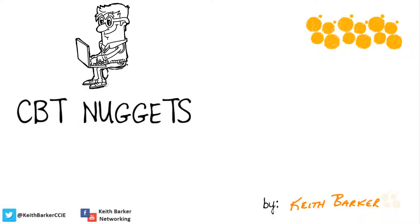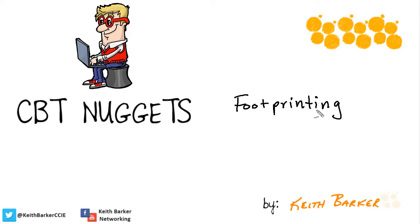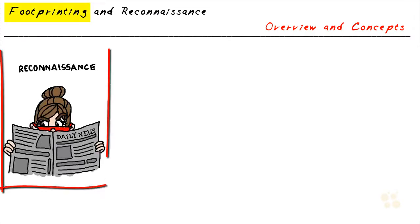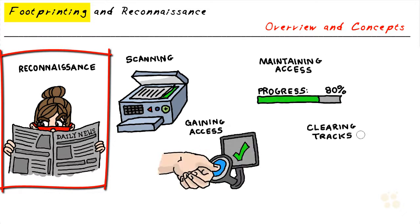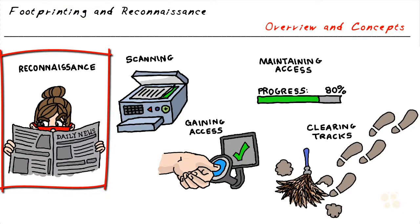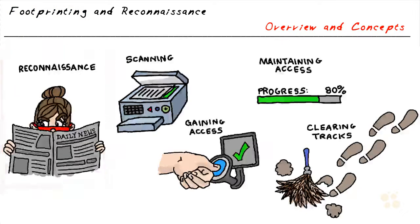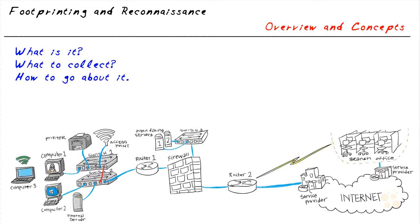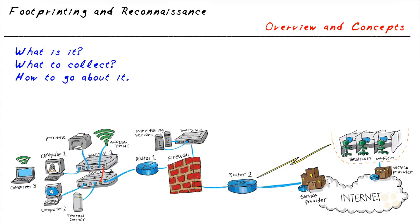Imagine we've been given permission to do some reconnaissance and footprinting of an organization — all our authorization slips signed by the right people. The question is: what are we going to be looking for, and what methods can we use to collect information about the potential target? Footprinting is the very first step of an attack on a system — whether that's a network, host, or server — where the attacker gathers publicly available information. Since it comes from public sources, it's a passive type of attack, and the target doesn't even know we're interested in them.